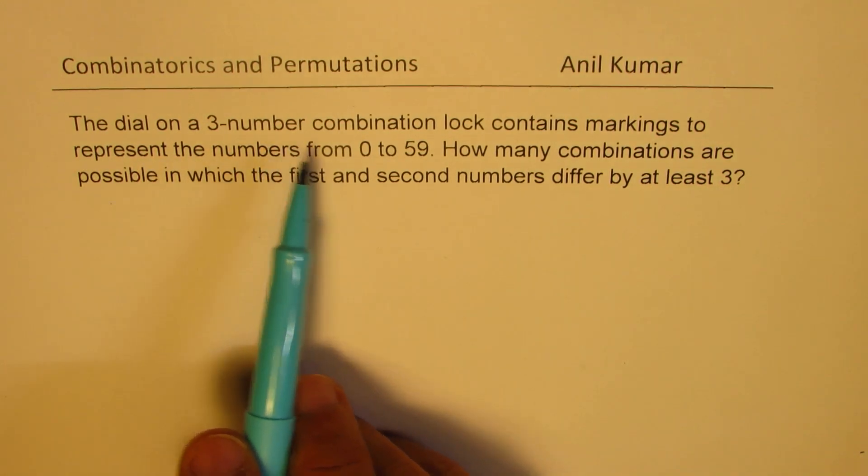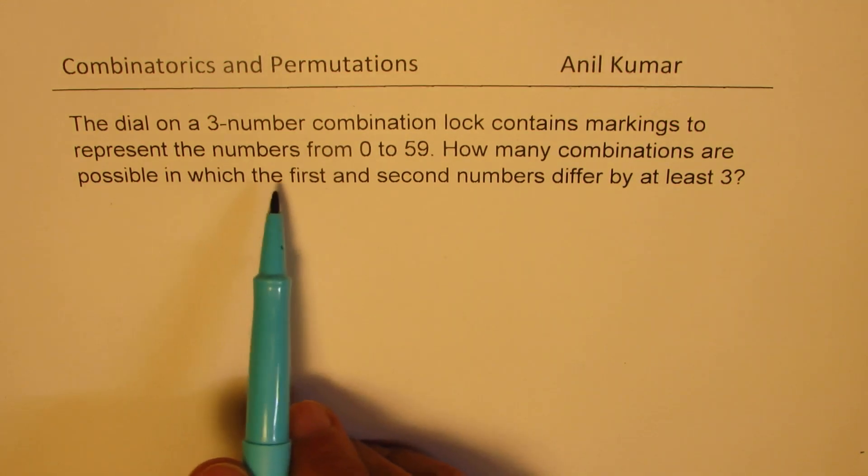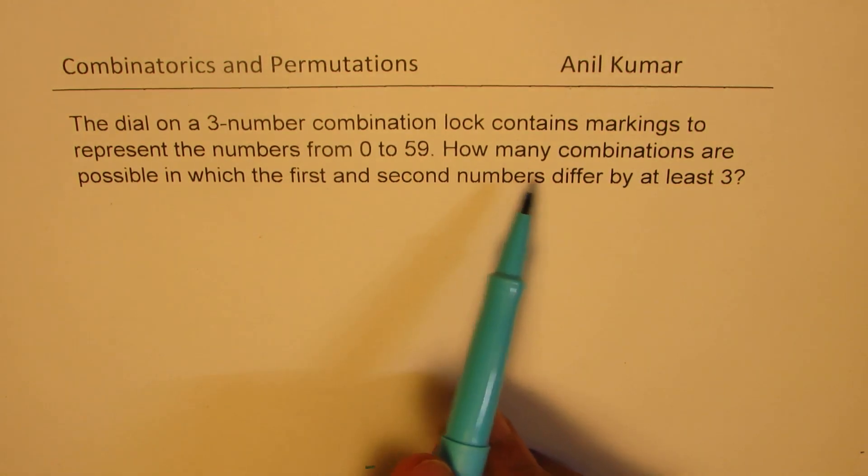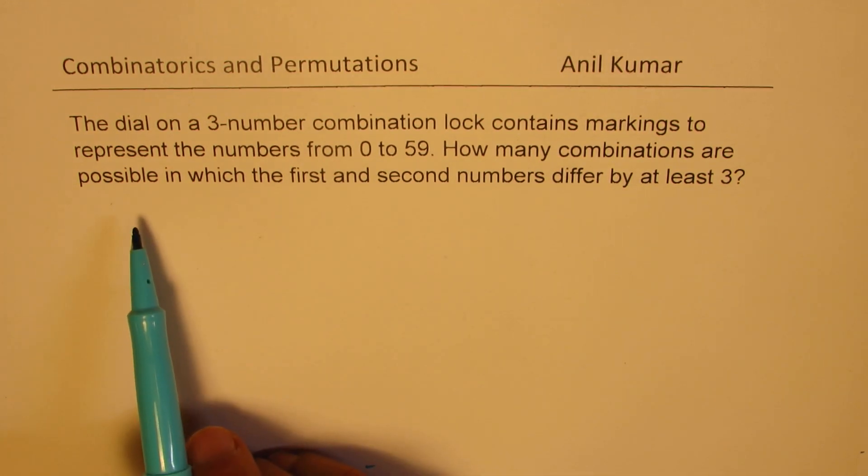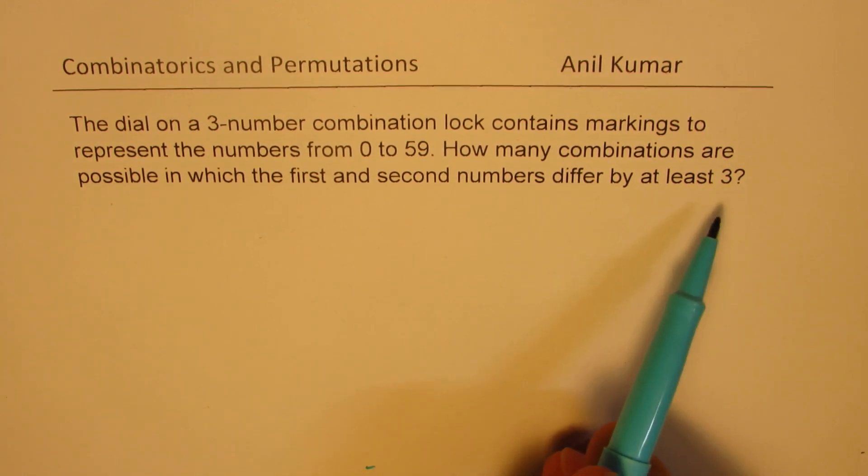The dial on a three number combination lock contains markings to represent the numbers from 0 to 59. How many combinations are possible in which the first and second numbers differ by at least 3?